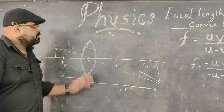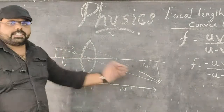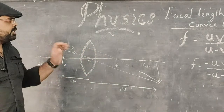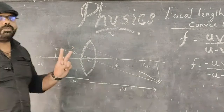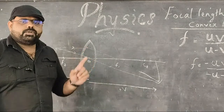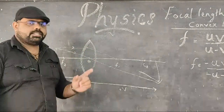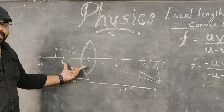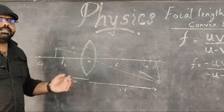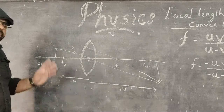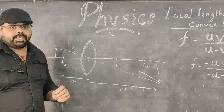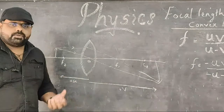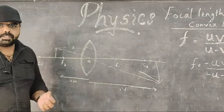Now let us go to the experimental part. We are using two methods today. First we are doing the distant object method. Why? Because as I mentioned, the object should be placed more than the focal length from the lens, so we need an approximate idea of what the focal length of the convex lens is. We can get that approximate value by the distant object method.